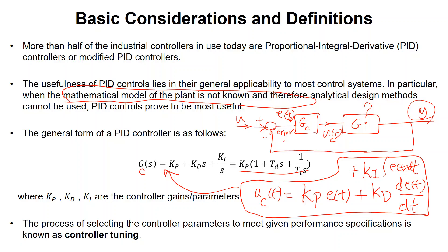Many other control laws you might see later — at the graduate level — such as nonlinear feedback linearization, adaptive control, observers, and so on, require you to know the mathematical model of G in order to derive the control law. But with PID you don't care. All you need is these three parameters, and you change them to get your desired output.